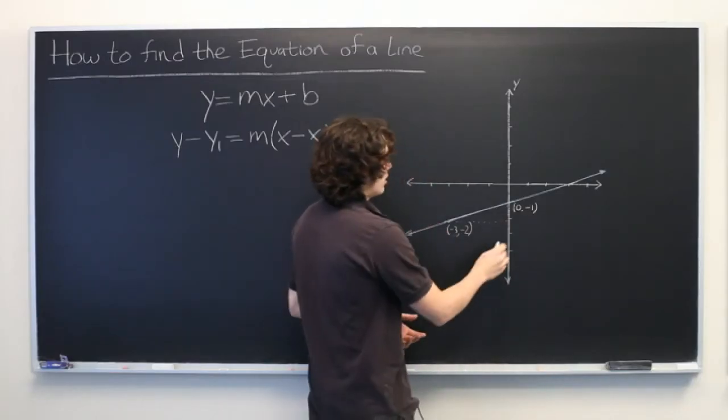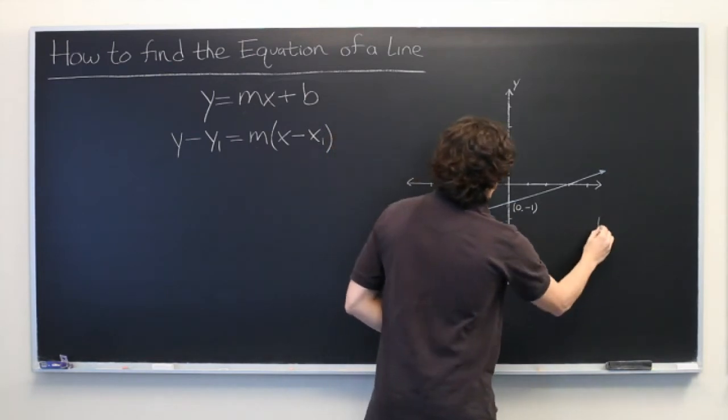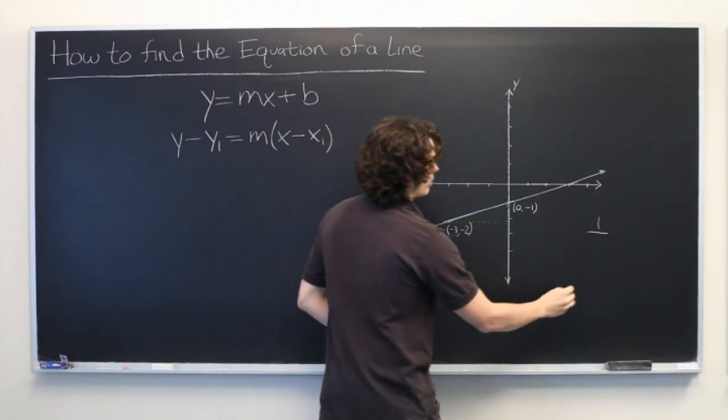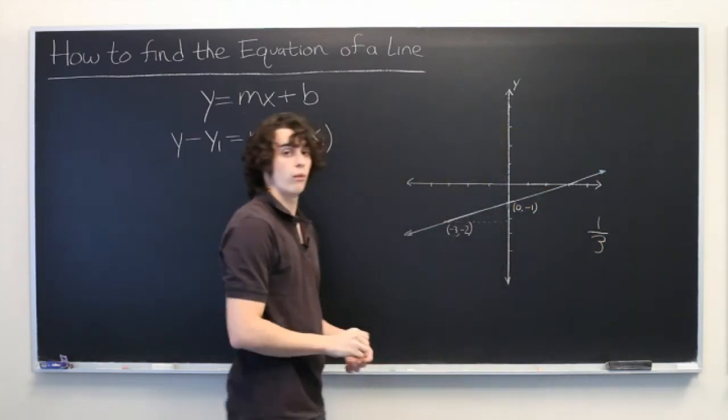Here, we can see that the rise is one unit, while the run is three units, giving a slope of one-third.